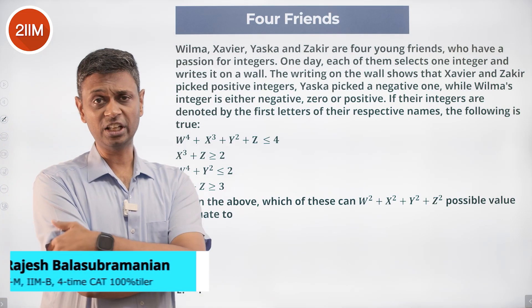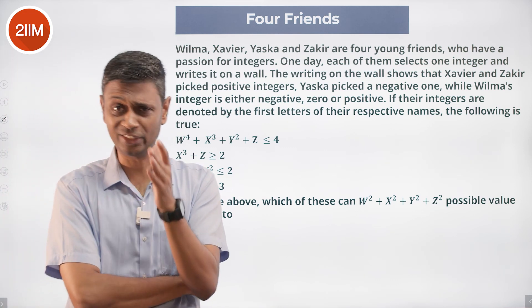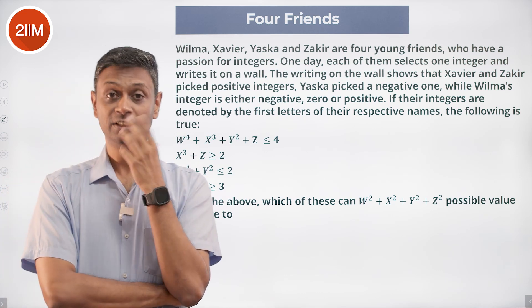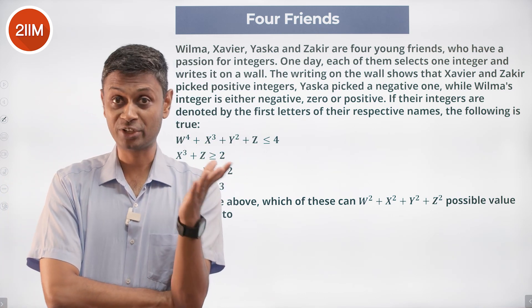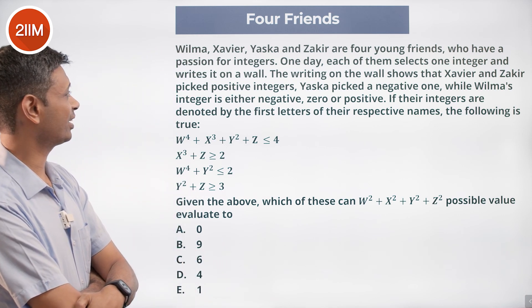Wilma, Xavier, Yaskar, and Zakir are four young friends who have a passion for integers. I really like this phrasing, passion for integers. I thought there were only a few lunatics like that, me being one of them. But hey, there are people around who have a passion for integers. Nice. One day, each of them selects one integer and writes it on a wall.